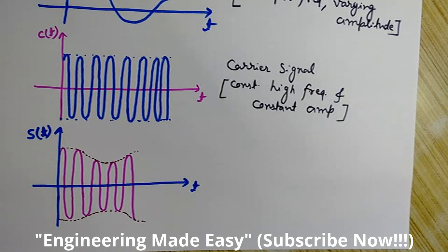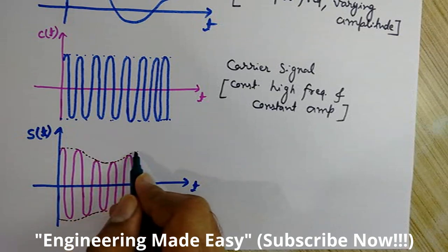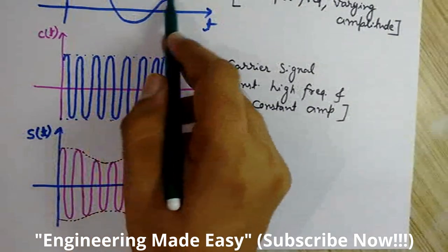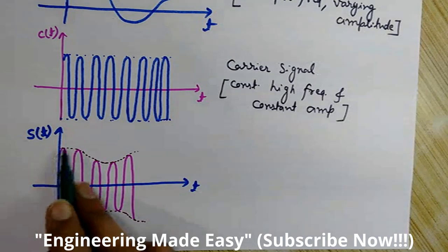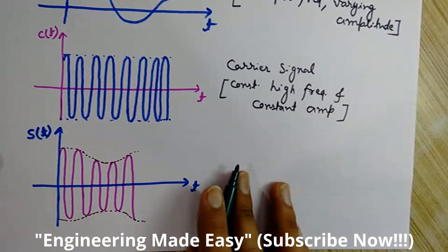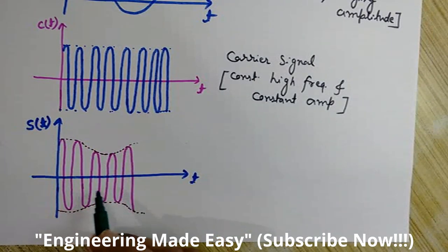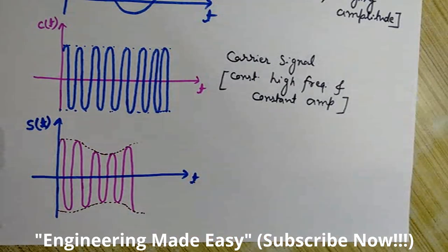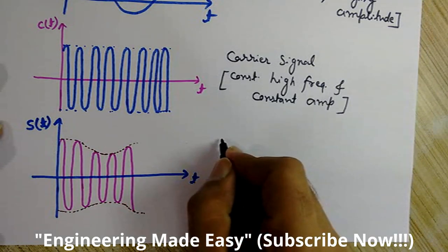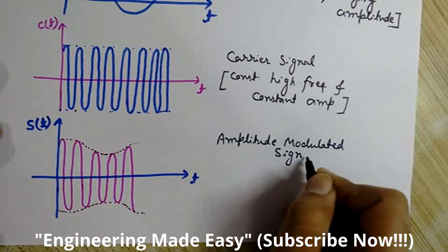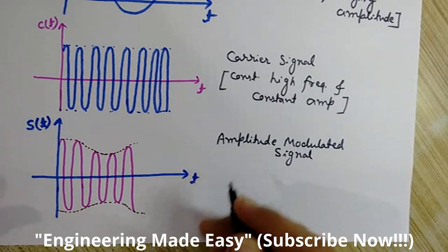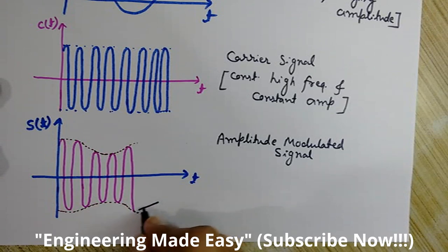You can see this shape is the same as the shape of the message signal. This part is the upper sideband and this is called the lower sideband. So we have two sidebands. This is the amplitude modulated signal.